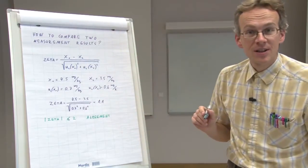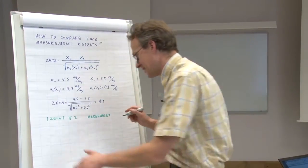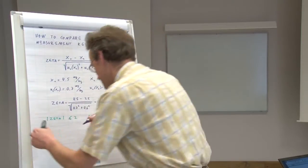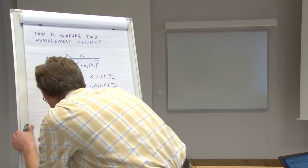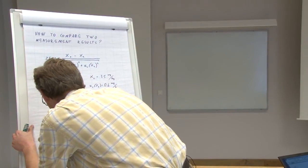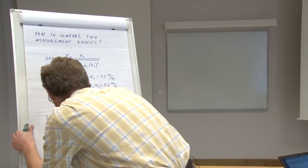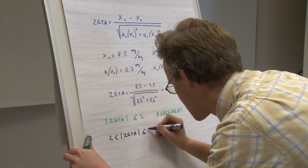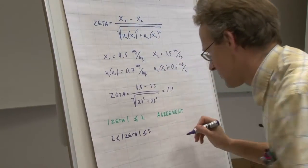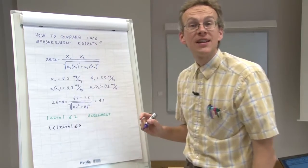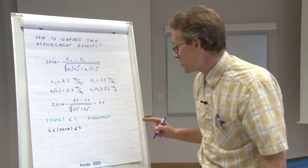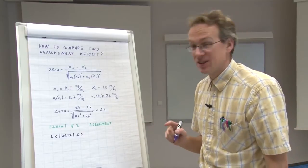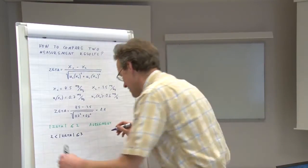If the zeta values are between 2 and 3, we say that it's a warning situation. We cannot yet say that there is really disagreement, but indeed the difference is still quite high.